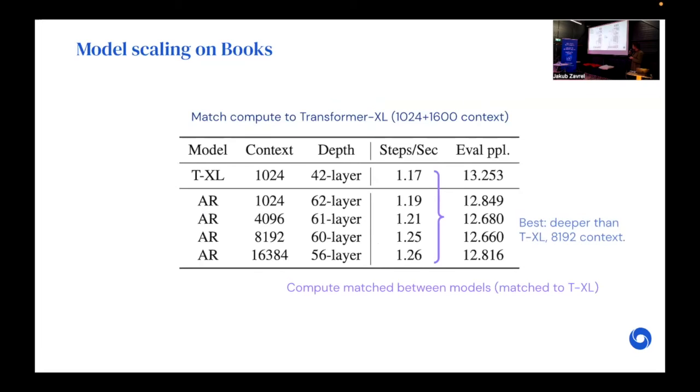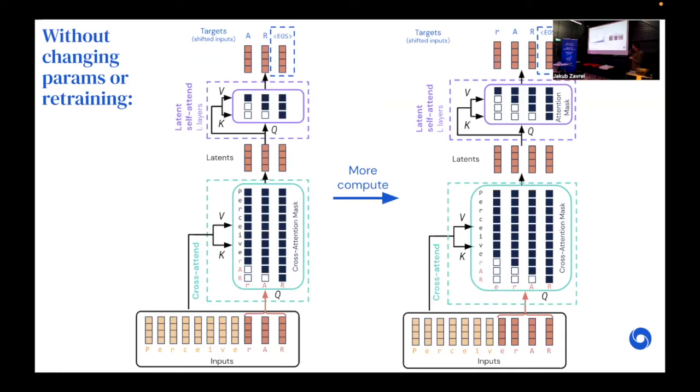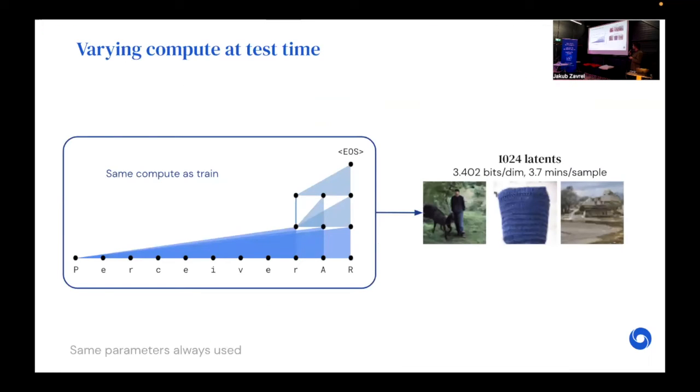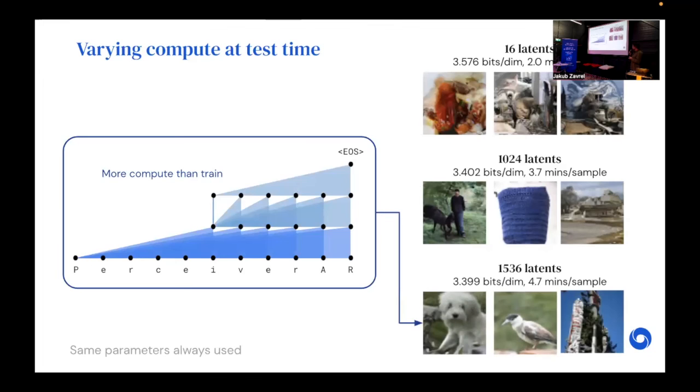You can use the model, take a pre-trained model and change the number of latents that are actually used in the model and get comparable results. Or you can increase the number of latents at test time to get improved results. Basically, this is a model that can be very easily deployed with different compute requirements in order to get better output results.